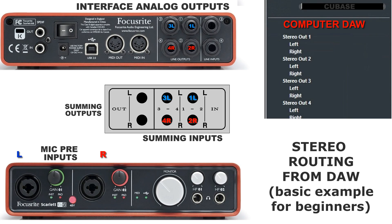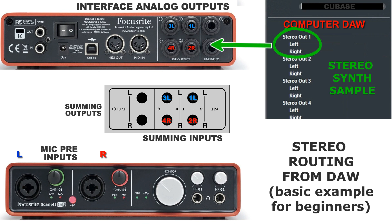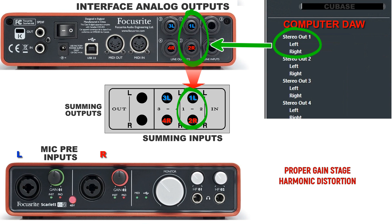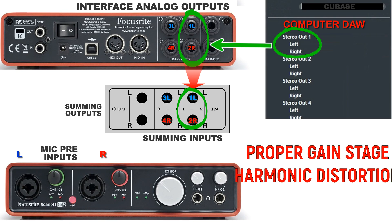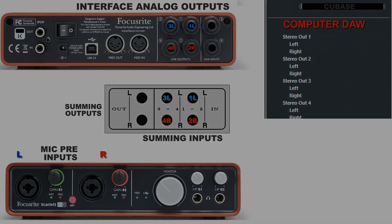Stereo instruments routing from DAW. Let the example be a stereo synth sample track. Route the stereo synth from the computer to the corresponding DAW interface outputs, then send it to the summing mixer for analog summing. Pay attention to proper gain staging from the DAW to hit the proper harmonic distortion on the summing inputs.